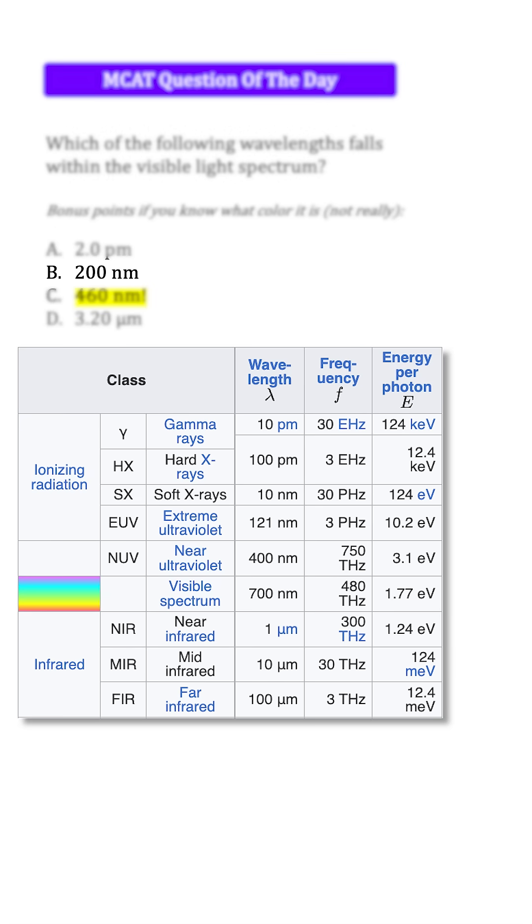B, 200 nanometers, looks enticing at first, but this falls just short of the visible range in what we call the ultraviolet range.